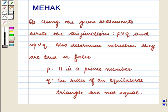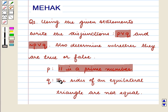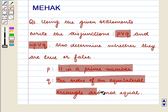Hello and welcome to the session. In this session we are going to discuss the following question: using the given statements, write the disjunctions P or Q and NOT P or Q, and also determine whether they are true or false. P is '11 is a prime number' and Q is 'the sides of an equilateral triangle are not equal.'